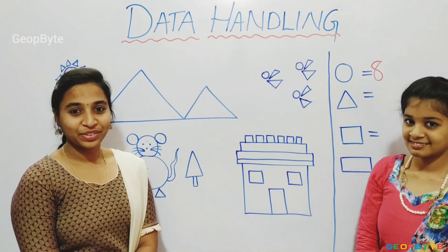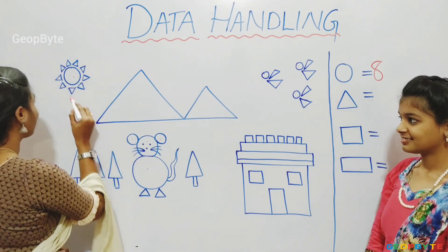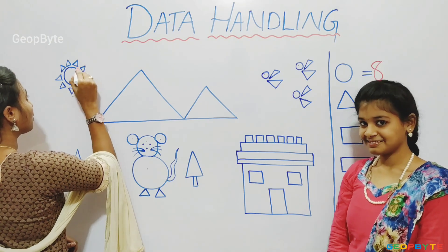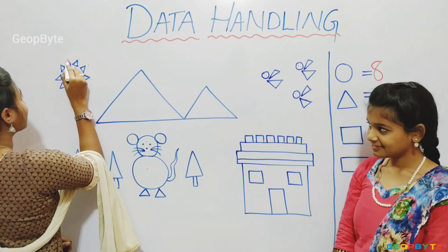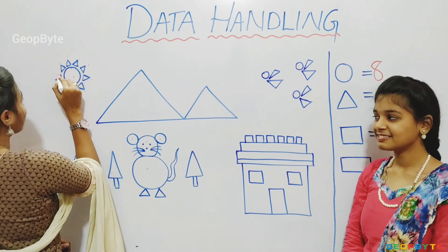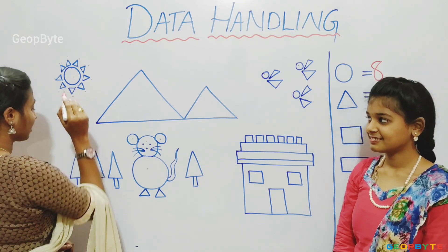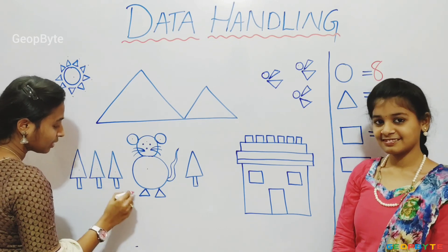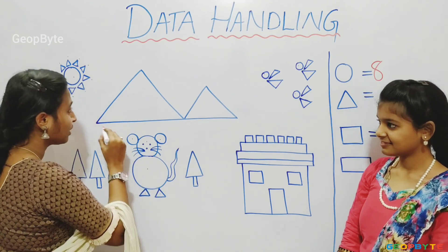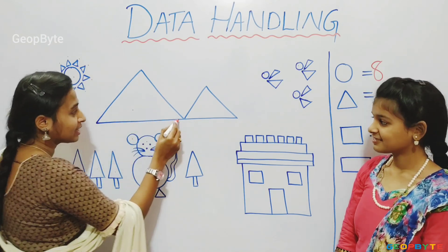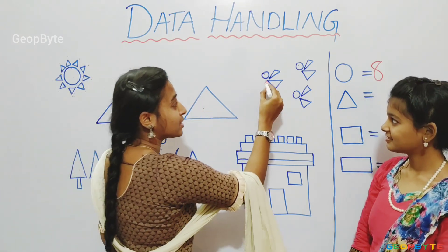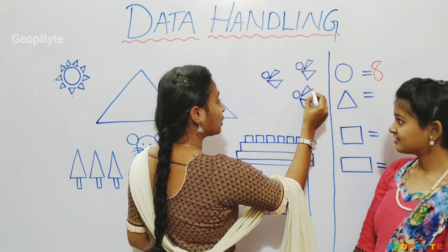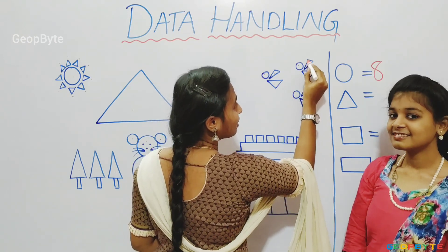Now let us go with triangles. One, two, three, four, five, six, seven, eight, nine, ten, eleven, twelve, thirteen, fourteen, fifteen, sixteen, seventeen, eighteen, nineteen, twenty, twenty-one, twenty-two.